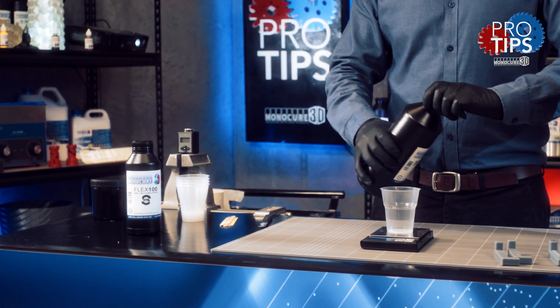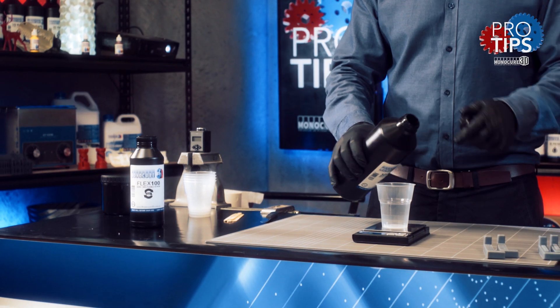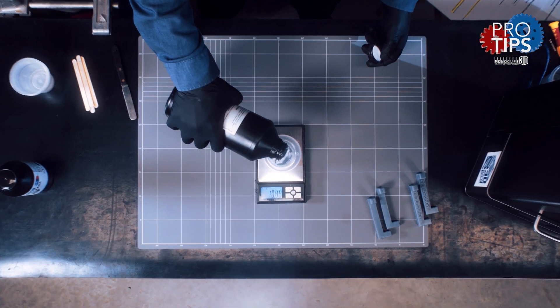Start by adding the larger part first, in this case the rapid resin. So carefully pour it until the scale reaches 75 grams.